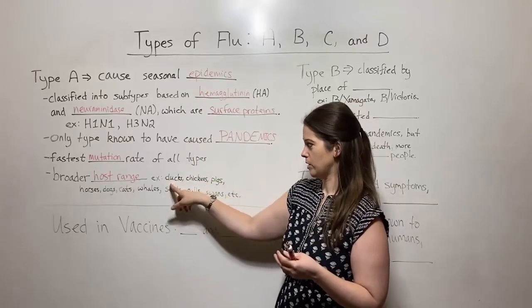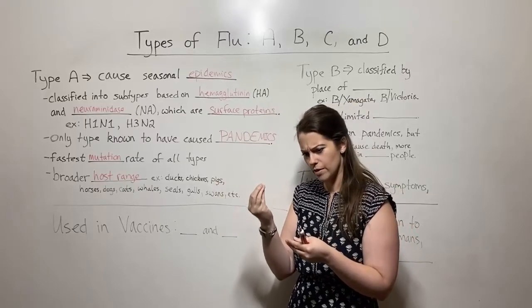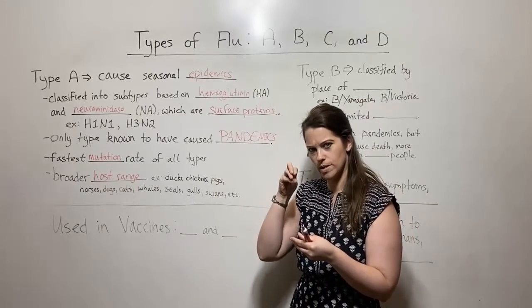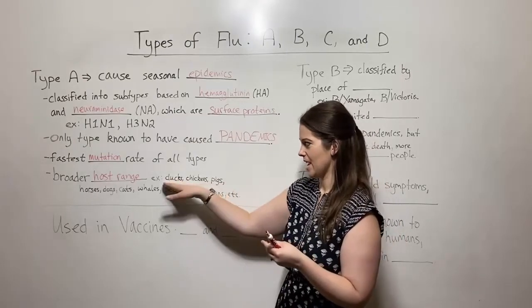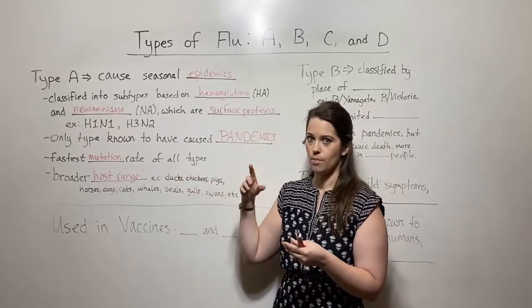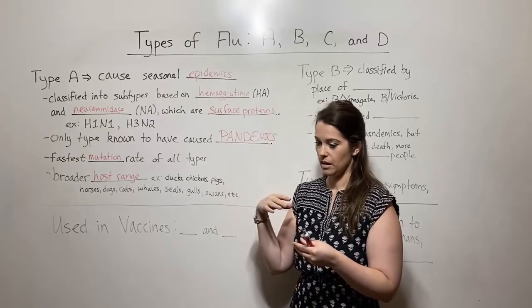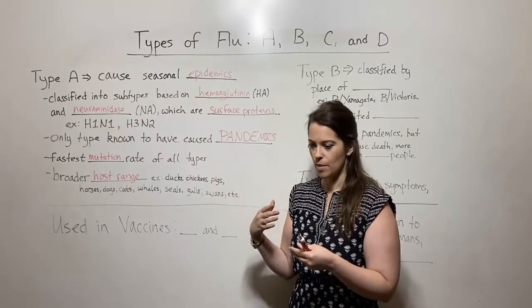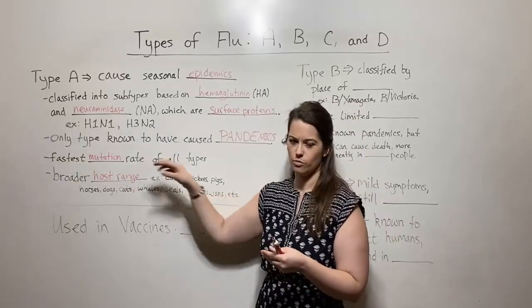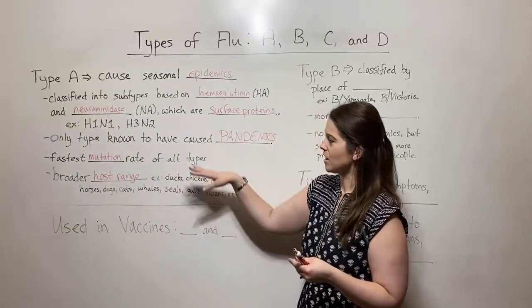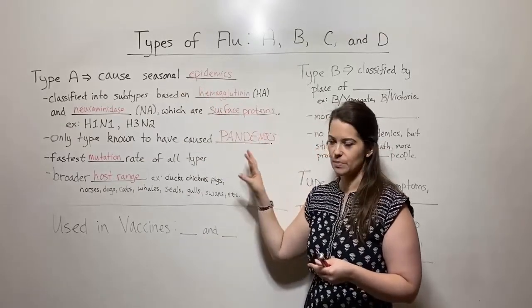And so if you have two different flu viruses, let's say one from ducks and one from pigs, and they jump into a human at the same time, and those two flu viruses jump into the same human cell at the same time, you can get offspring viruses that contain genetic material from those two different flu strains. This is called genetic recombination. It's also referred to as antigenic shift, which is a little bit different from kind of your normal standard mutation. And that is what allows type A to cause pandemics and to be so deadly.